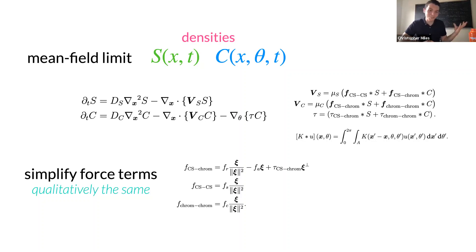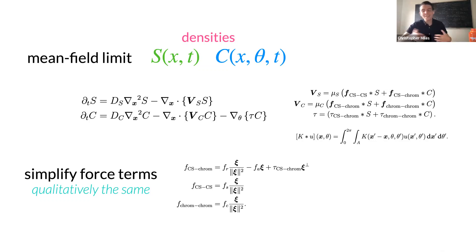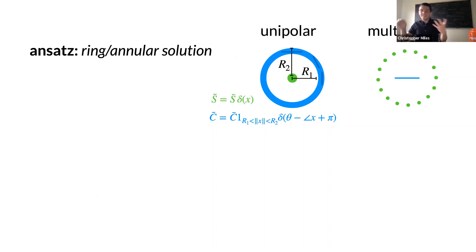We took a small leap: we made up the forces anyway, so why not take qualitatively similar but simpler ones? I took exponentials before, but you could use polynomial short-range repulsion and long-range attraction — qualitatively the same thing. There are actually simpler analytical forms that aren't quantitatively the same but are qualitatively the same. We changed the interactions slightly to enable some analysis.